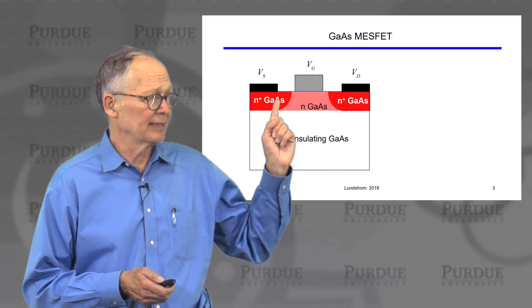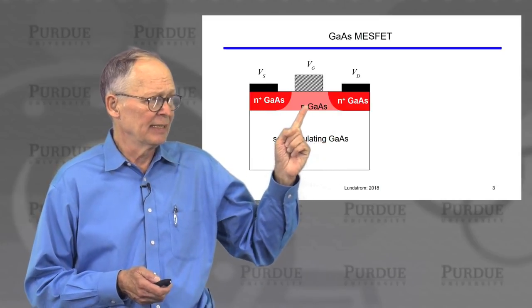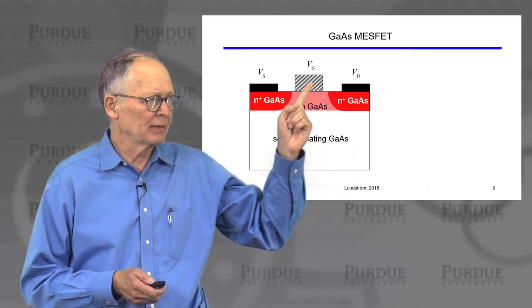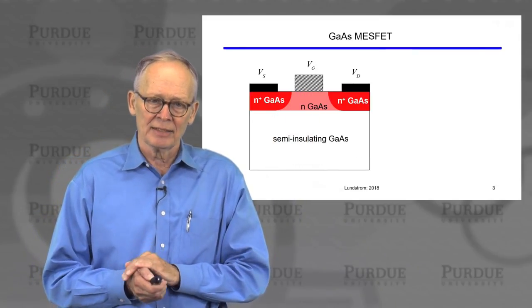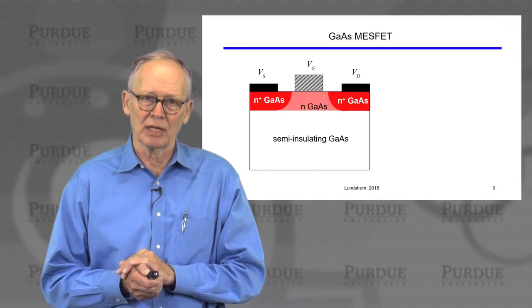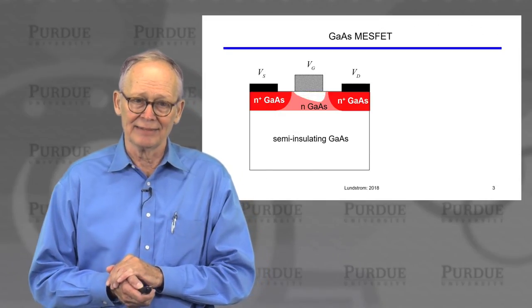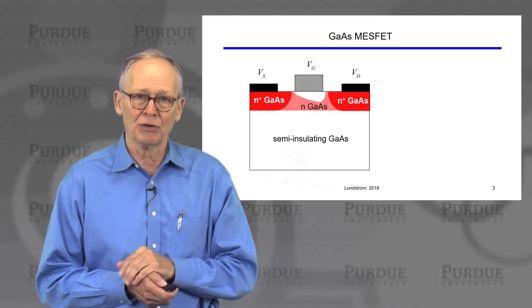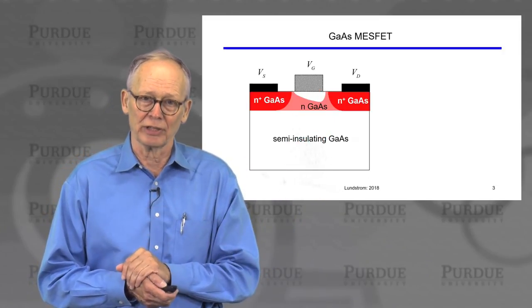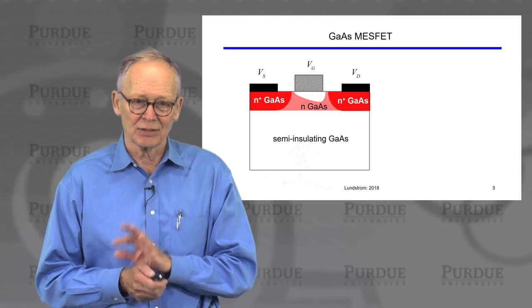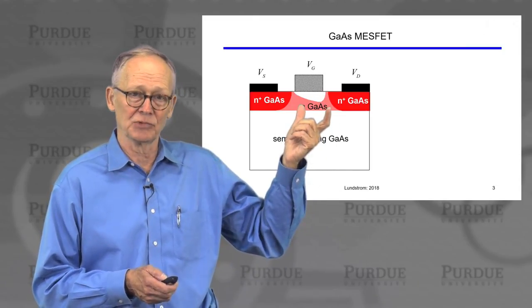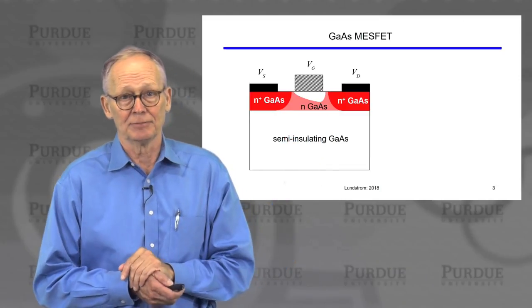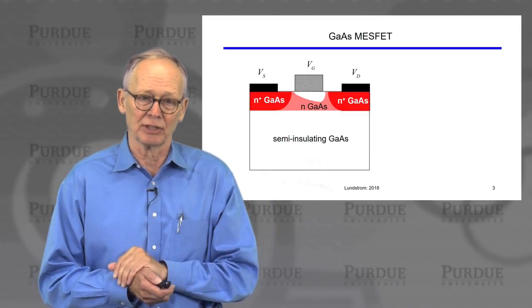The MESFET device has a source and a drain with a lightly doped n-type region in between. The metal-semiconductor junction forms a Schottky barrier with a depletion length. By applying a reverse bias to that Schottky barrier and pushing the depletion region down, we can control the current from source to drain. This is a depletion-mode device — normally on, and we deplete it to turn it off.